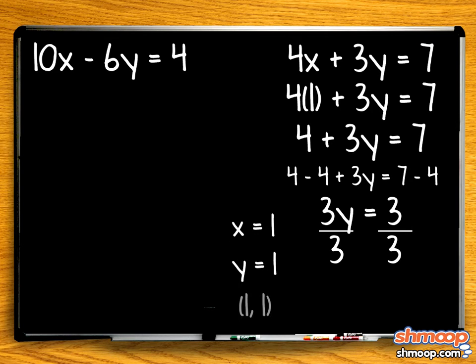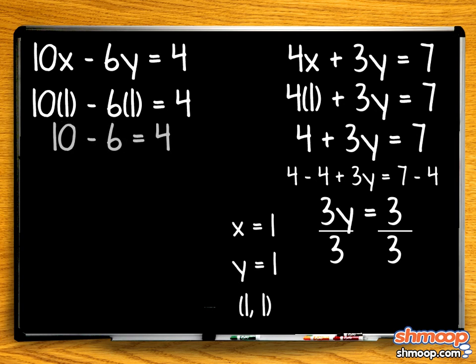Looks like the answer is 1 comma 1, but let's make sure. Plugging 1 for both x and y in the second equation checks out. 10 minus 6 does, in fact, equal 4.